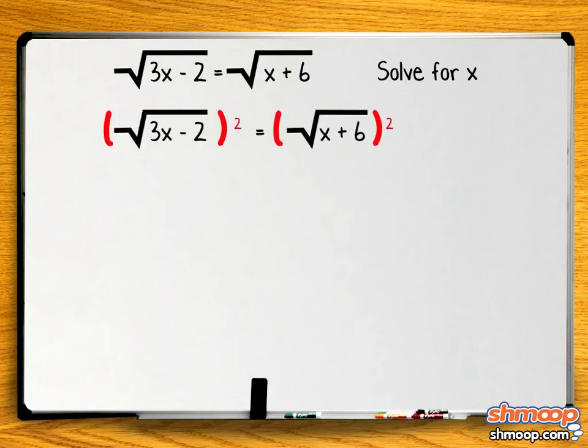First square both sides to get rid of the square roots, leaving us with 3x minus 2 equals x plus 6.